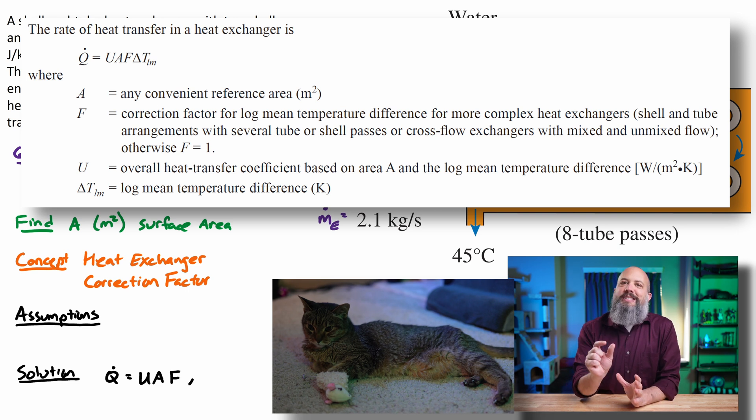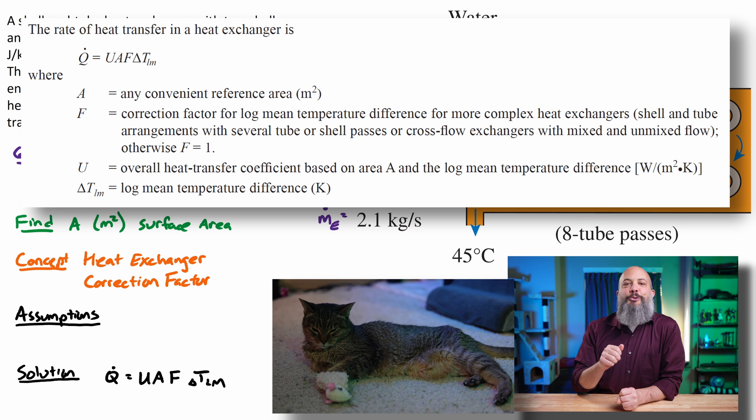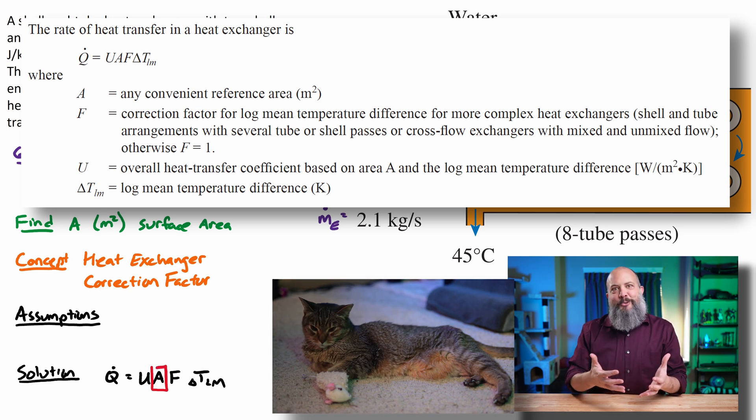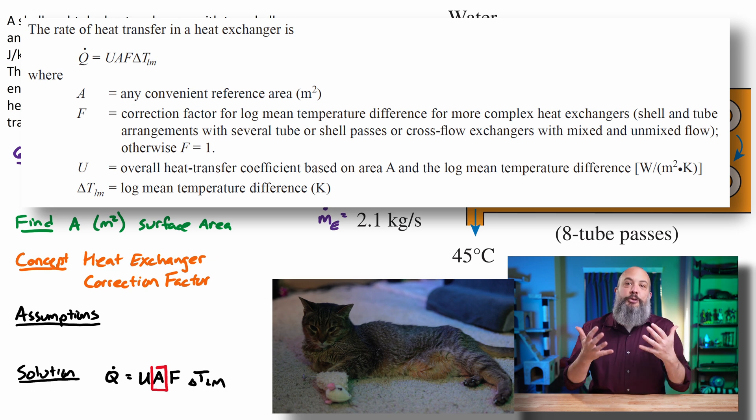but again, you have this extra value F. So Q dot equals U A F delta T_LM, where the delta T_LM is the log mean temperature difference, and F is this correction factor which accounts for the shell and tube design.